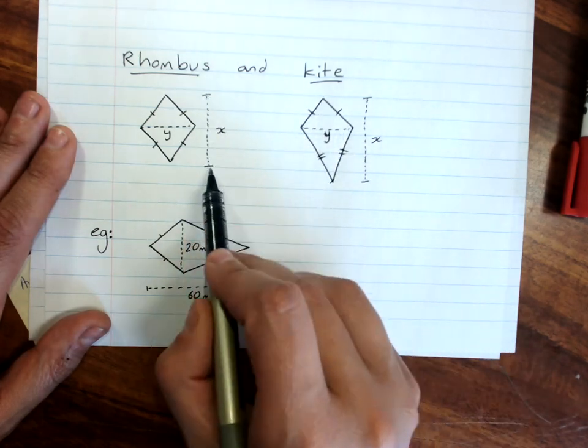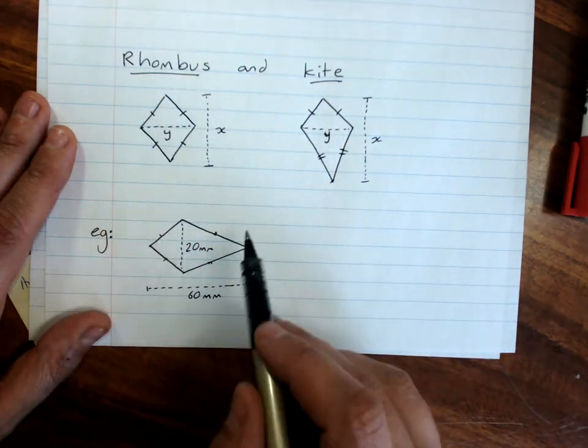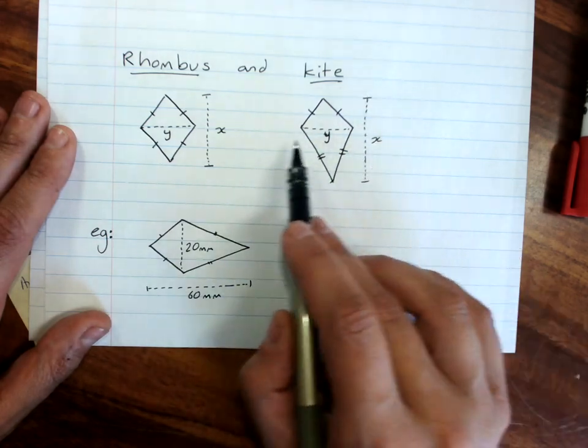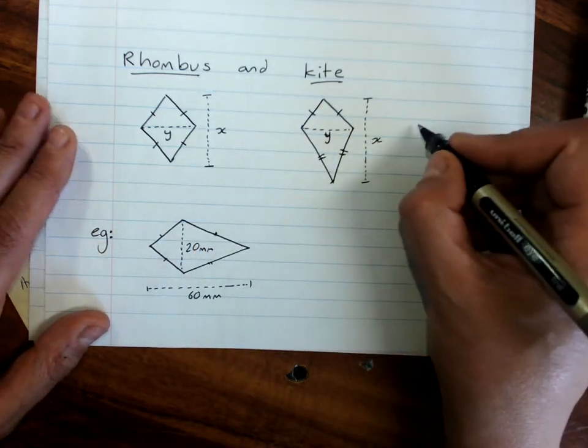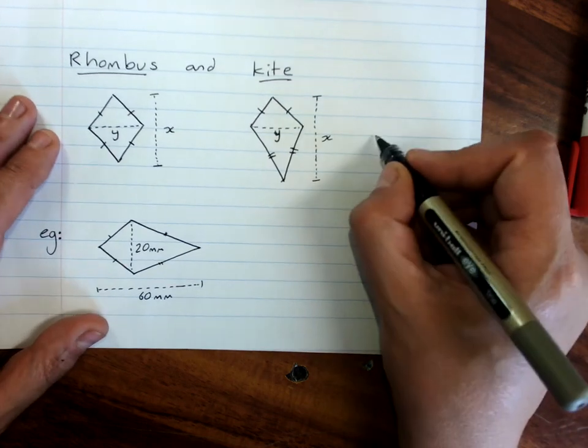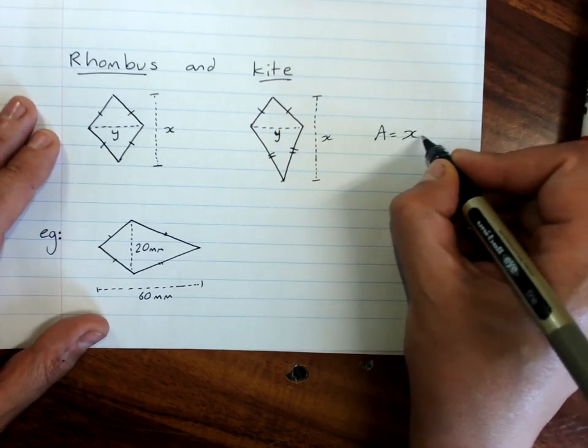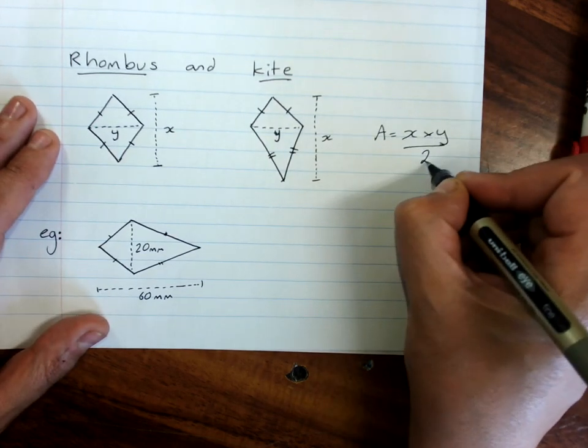Sometimes they give them outside, sometimes across the center. But they're at right angles to each other and they're called x and y. For both of them, the area is x times y divided by 2.